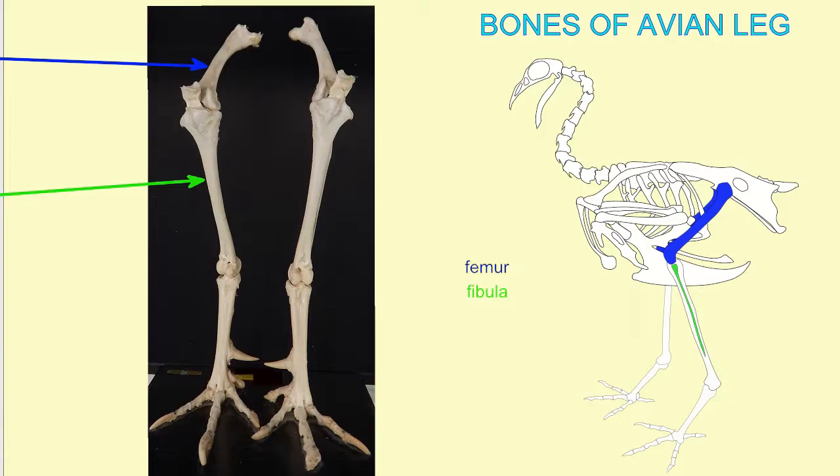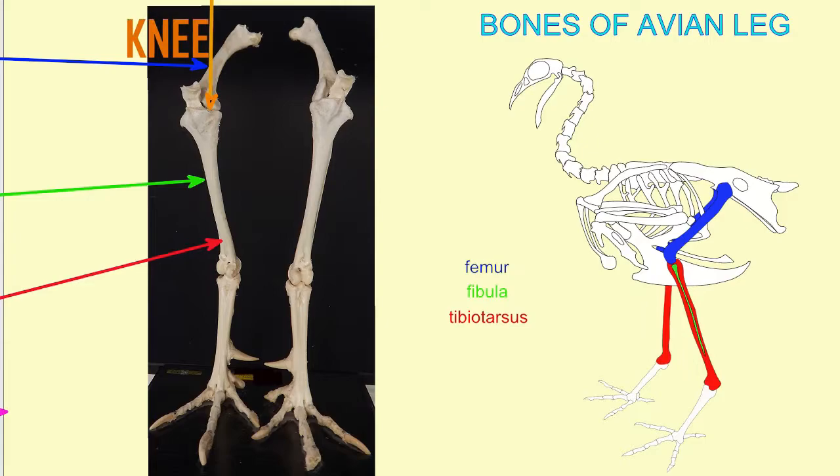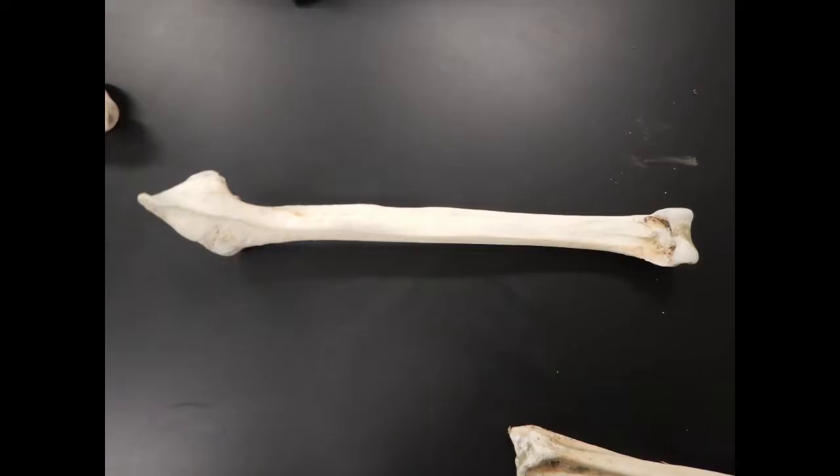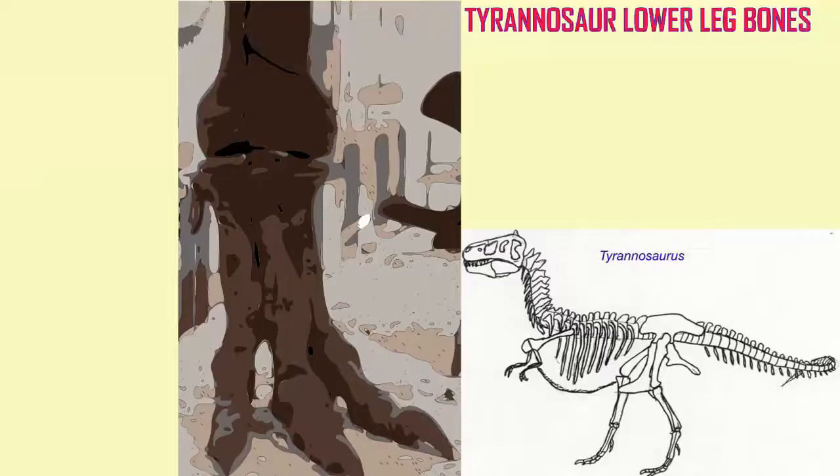In birds, however, these would fuse completely, and these sutures would no longer be visible. And so, this bone in the emu is the tibiotarsus — it is the resultant bone from the fusion of the tibia and the two tarsal bones in the ankle joint.